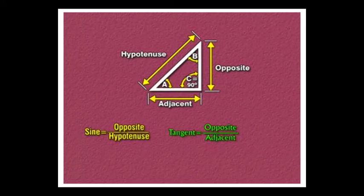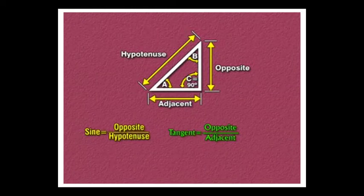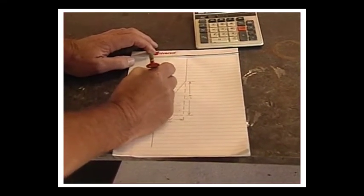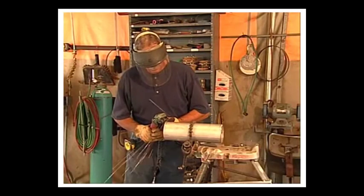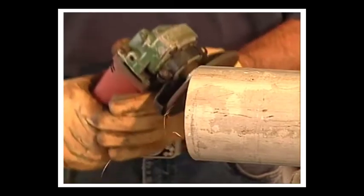In these formulas, opposite means the side opposite angle A. Adjacent is the side next to angle A, but not the hypotenuse, which is the angled part of a right triangle. Because a piping offset forms a triangle, we can use those trig functions and constants to accurately calculate pipe dimensions and exact angles necessary for piping offsets.